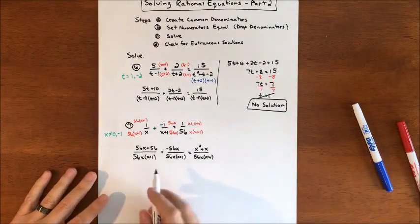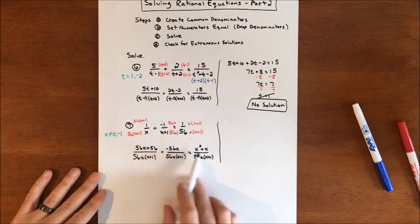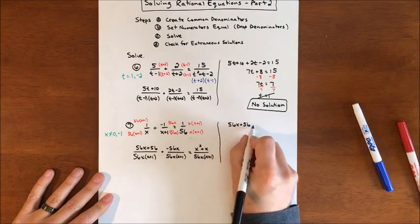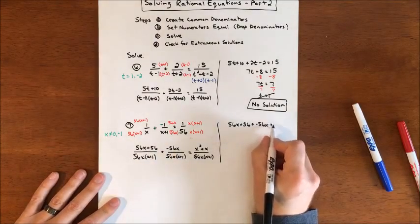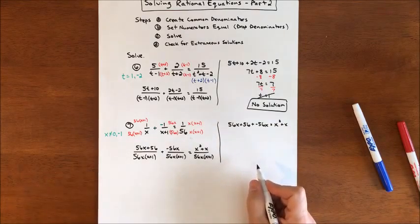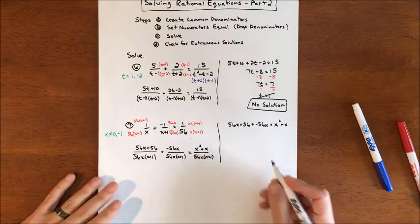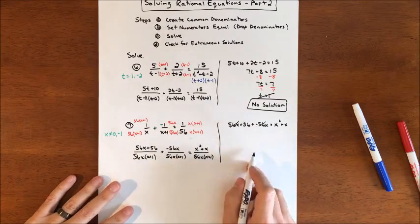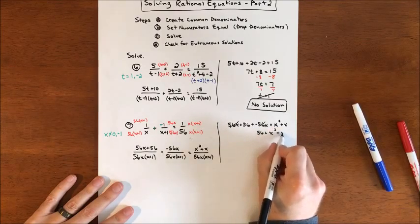We have our common denominators, so now I can drop all of that and just focus on the numerators. We have 56x plus 56 plus negative 56x equals x squared plus x. The 56x and negative 56x are going to cancel each other, so we have 56 equals x squared plus x.